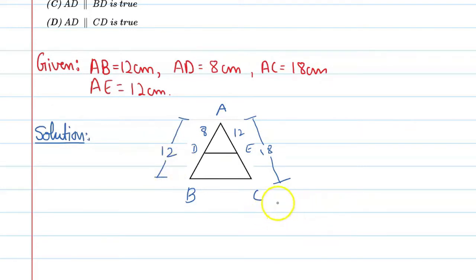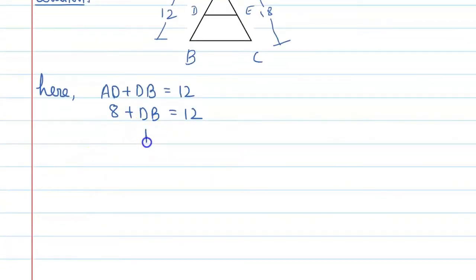So, now, let's check the condition given in the options to see which condition is satisfied. Here, AD plus DB is equal to 12. And AD is equal to 8 plus DB is equal to 12. So, what we can say? We can say that DB is equal to 4. DB is equal to 12 minus 8, that is 4.